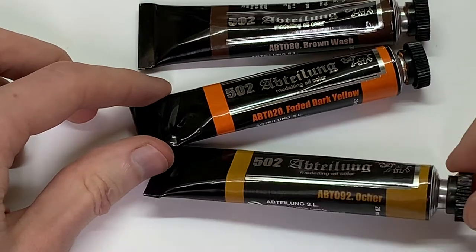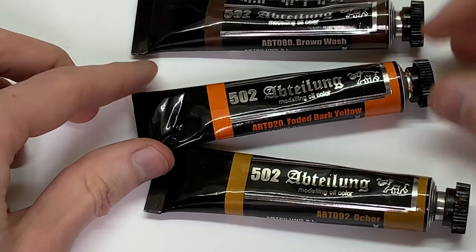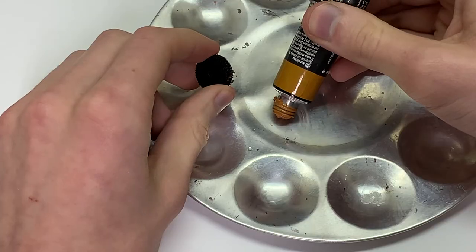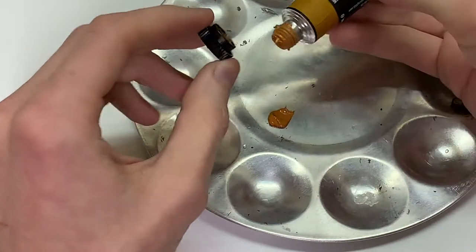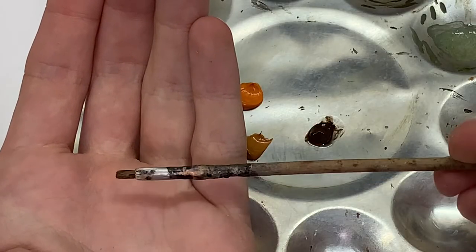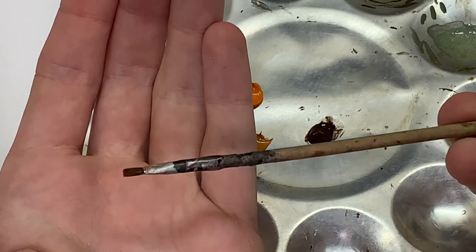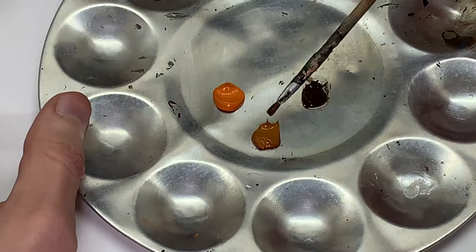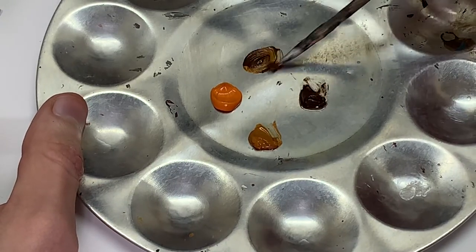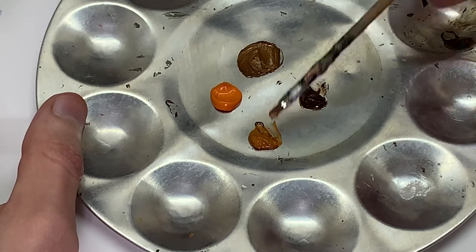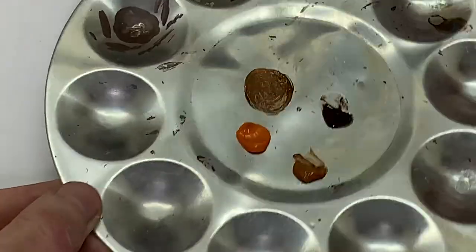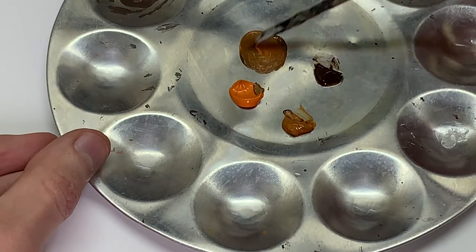So next, oil paints. I'm using these three shades, some ochre, faded dark yellow, which is an orange and brown wash to get the desired shades I need. And I'm using this old flat disgusting looking brush that I'm not afraid to beat up in order to paint the wood grain. And I just keep mixing the three colors without really any ratios until I get the desired shade that I need.